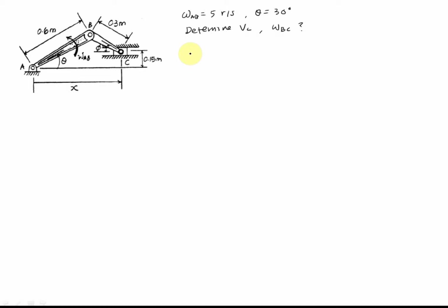Looking at the geometric configuration: the total horizontal length X equals L1 plus L2. I want counterclockwise as positive, so I define phi from the horizontal line. L1 equals 0.6 cosine theta, and L2 equals 0.3 cosine(180 minus phi).